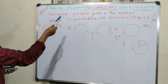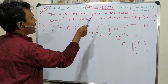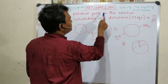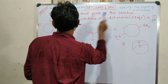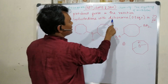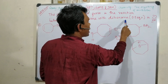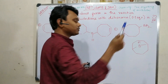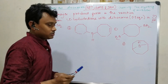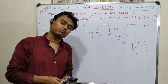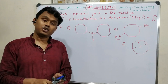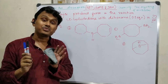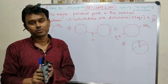The question is: what is the major product formed in the reaction between 1,5-cyclooctadiene with diborane at 0.5 equivalent? When you have such questions, I always request you to be patient and read the question properly.